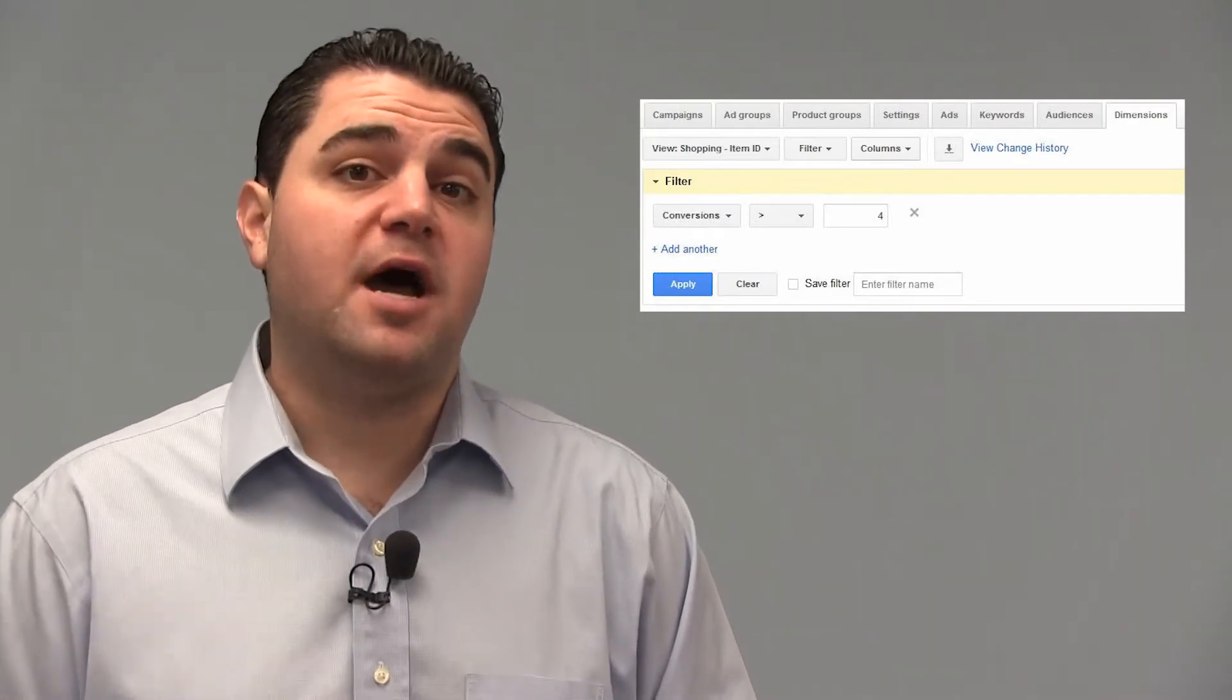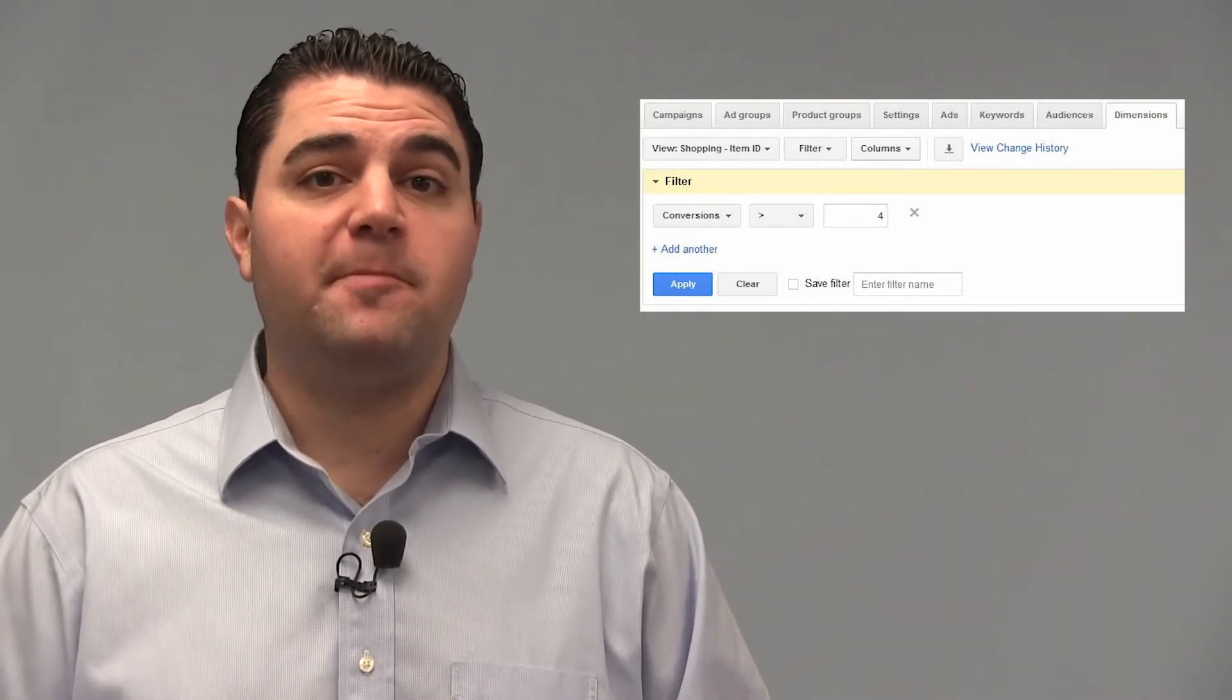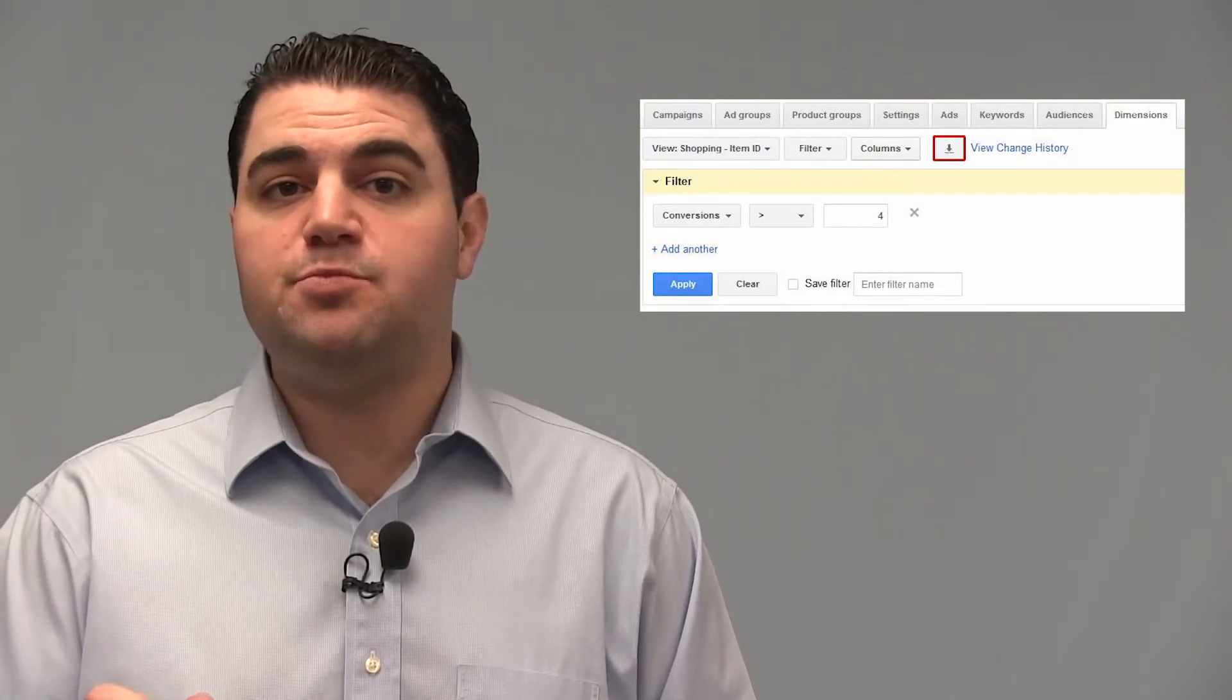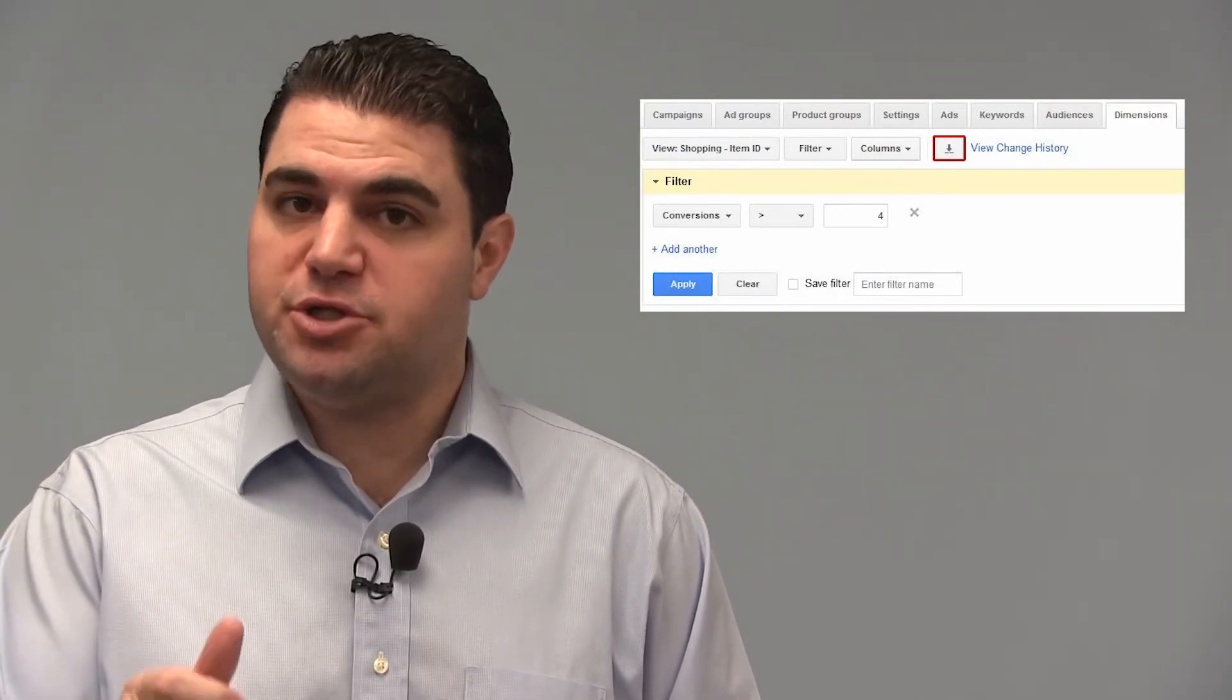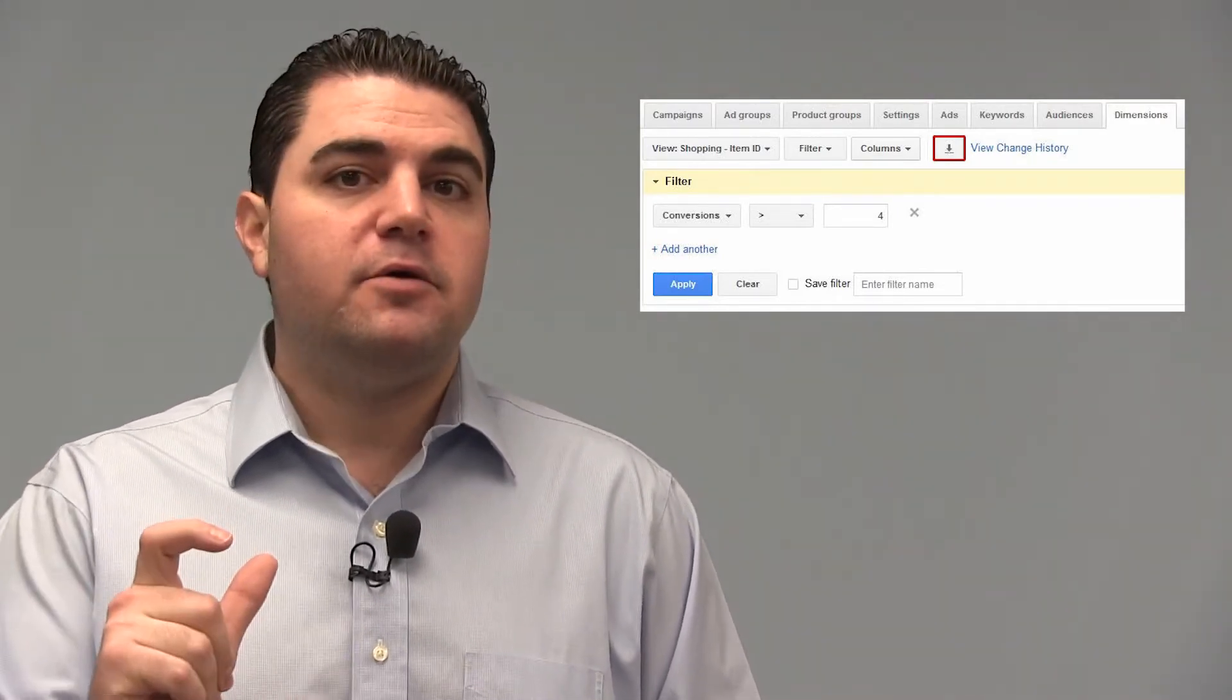Great, now with our top performers all we have to do is export from AdWords. So quickly click the download tool and export these IDs, just your product IDs that's all we need from AdWords to an Excel or a dot CSV file. Awesome, now we have our top performers and next we have to actually build the campaign that we're going to house them in.